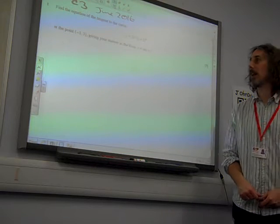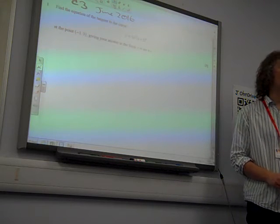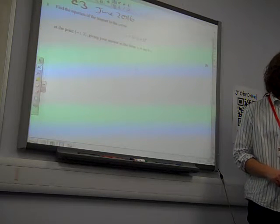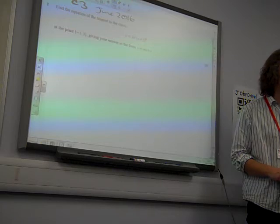Find the equation of the tangent of the curve y equals 3x squared times x plus 2 to the power 6, minus 6, at the point minus 1, 3. Y equals 0, minus 6. A nice straightforward start.